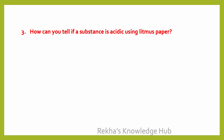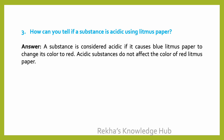How can you tell if a substance is acidic using litmus paper? A substance is considered acidic if it causes blue litmus paper to change its color to red. Acidic substances do not affect the color of red litmus paper.